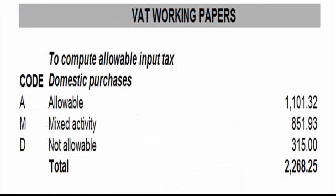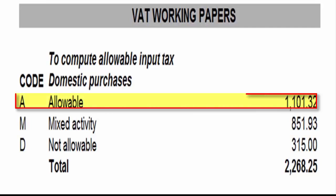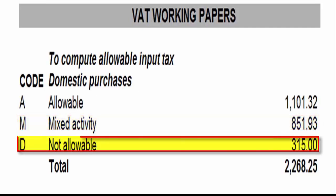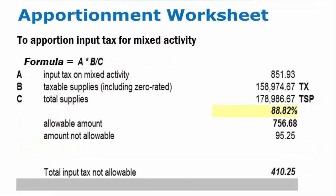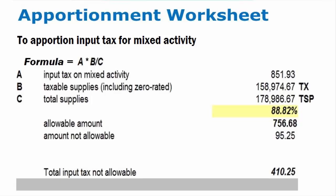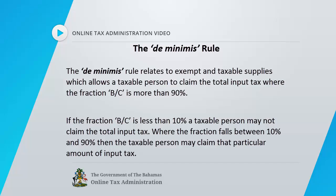To compute allowable input tax, identify the type of domestic purchase — that is, A (allowable), M (mixed activity), and D (not allowable). To apportion input tax for mixed activity, use the apportionment formula A times B divided by C, where A equals input tax on mixed activity, B equals taxable supplies including zero rated, and C equals total supplies. Please remember the de minimis rule, which allows a taxable person to claim the total input tax where the fraction B divided by C is more than 90%.